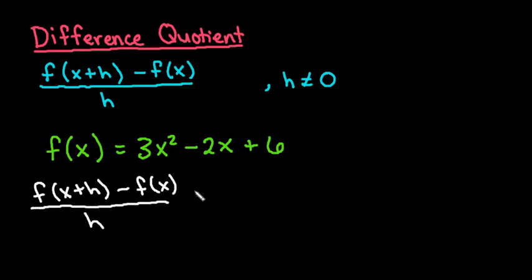So f of x plus h minus f of x divided by h is the difference quotient, and h cannot equal 0. It can be any other number but 0 because it would be undefined at 0.